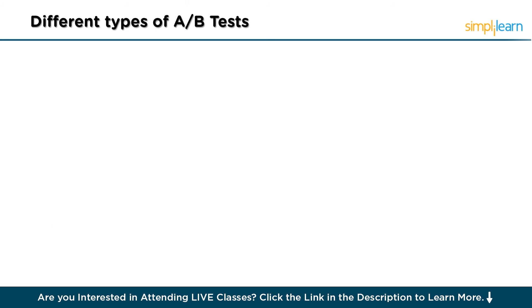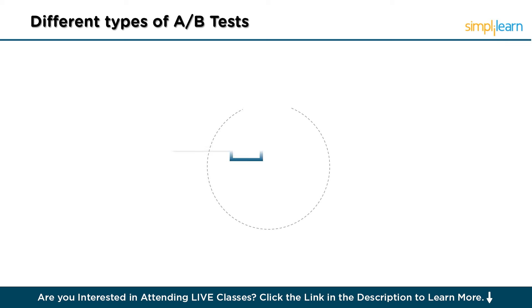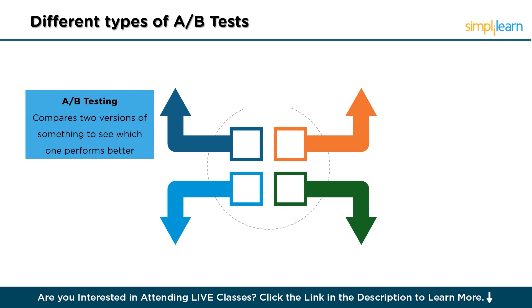Now let's understand the different types of A-B tests. First, classic A-B testing: this compares two versions of something to see which one performs better. Imagine having two posters advertising a concert — one in red and one in blue. You put up both posters in different places and see which one attracts more people. It's a straightforward test with only one change between the two versions.